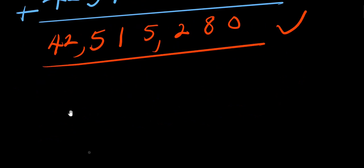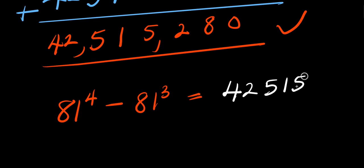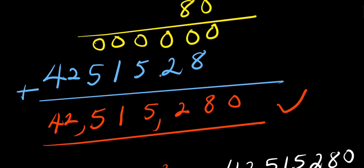So we have been able to solve for 81 to the power 4 minus 81 to the power 3 without a calculator. Our answer is simply 42,515,280. This is how to evaluate this expression without the use of a calculator, using a step-by-step method.